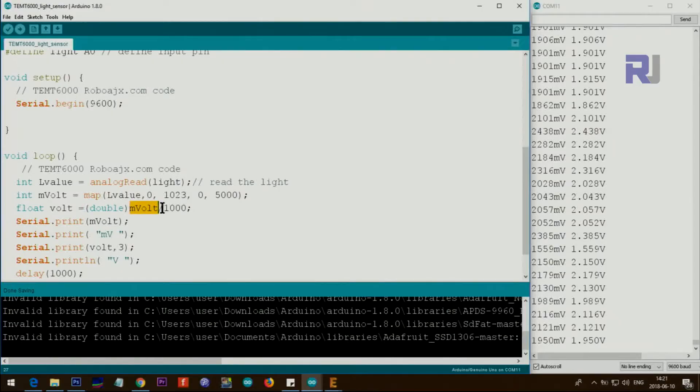So millivolt divided by thousand we get volts, but we convert the result into double in order to have the decimal points here. And then the result is here in volts, and then we print the volts. This is the value that you see. After that we print the text MV at the end, that is in millivolts. Then because this was the actual volts here, we print the volt with three decimal places and then we print the capital V at the end.